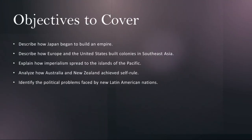We're going to begin by describing how Japan began to build an empire. Japan's path to empire building is a fascinating tale of modernization, militarization, and expansionism. We'll delve into Japan's rapid transformation during the Meiji Restoration, which saw the nation embracing Western technology, industry, and military tactics, with a newfound sense of nationalism and imperial ambition.